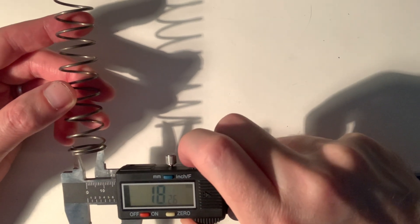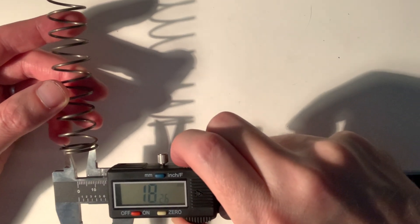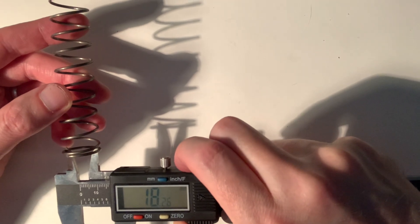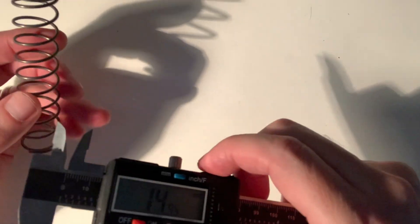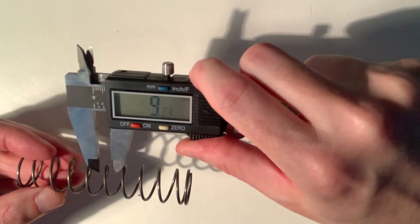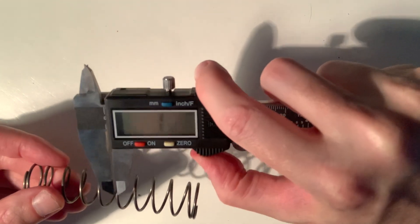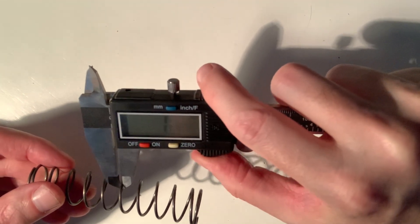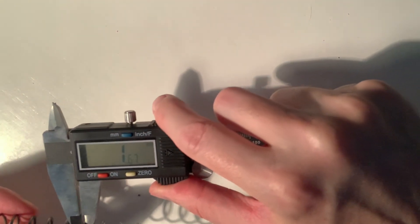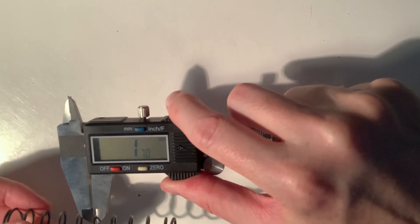And then the diameter of the wire itself is 1.7 millimeter, 1.7 millimeter.